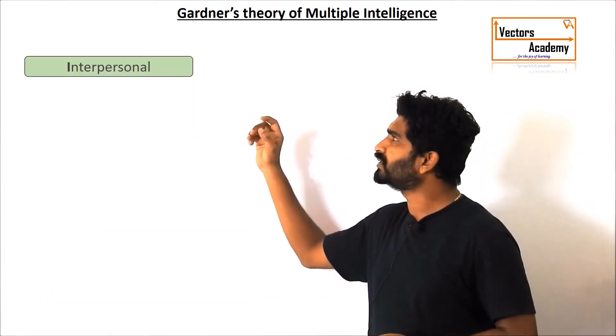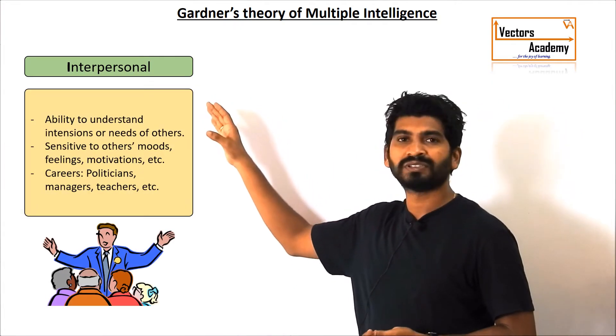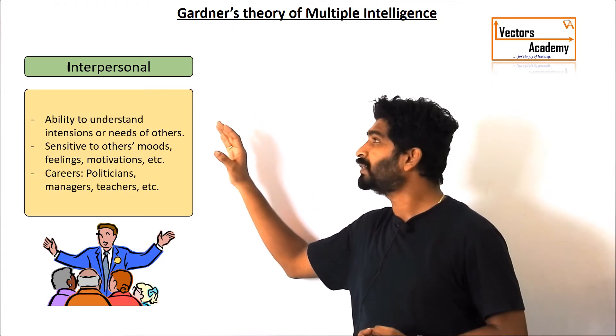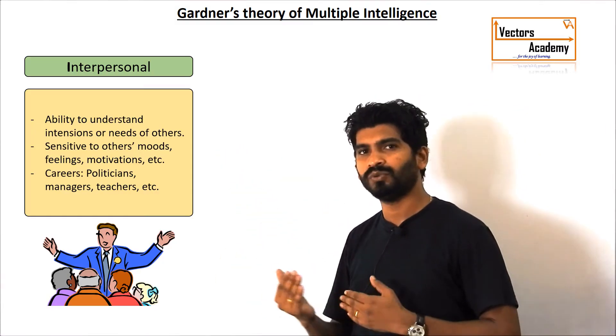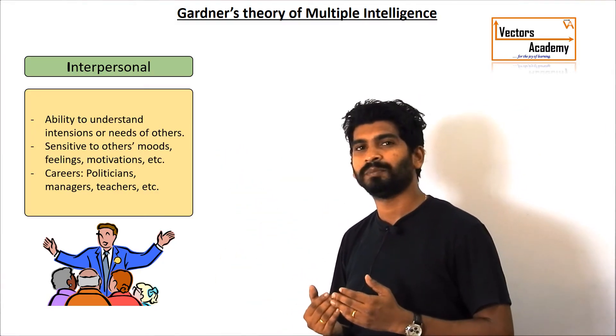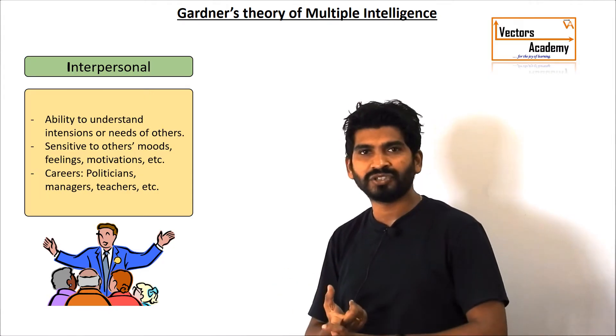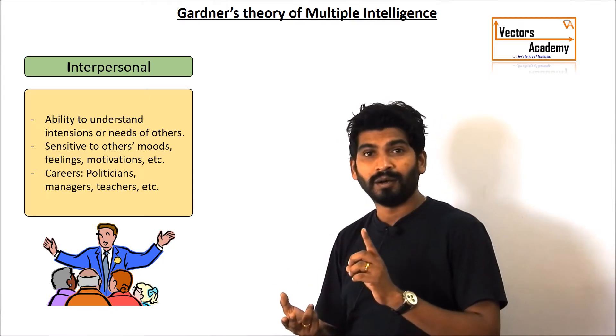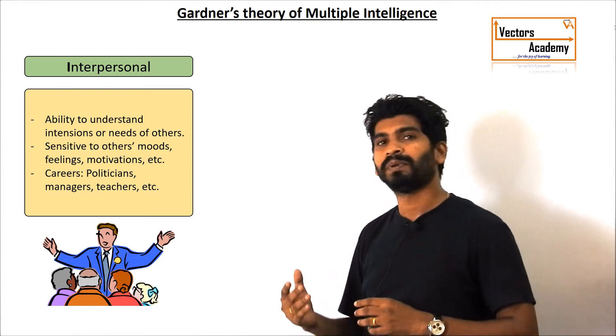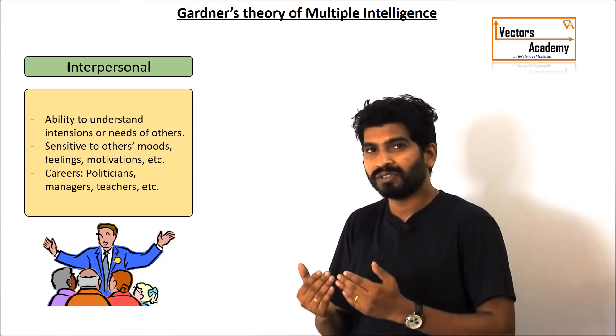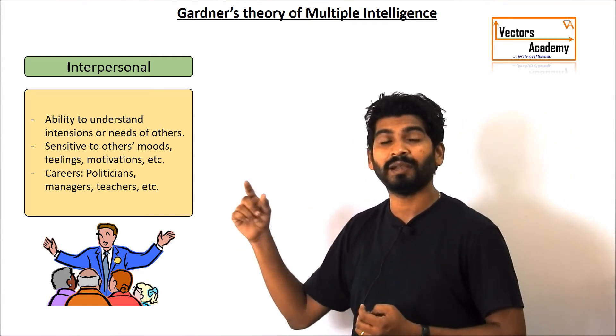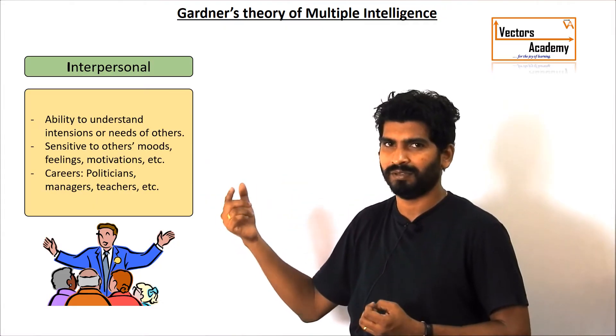The next comes the interpersonal intelligences. Interpersonal intelligence is how easily the person is able to have a conversation with another person. You can see the politicians, you can see the counsellors. These are the people who are able to have a proper conversation with the people so that they are able to convince the others very fluently.